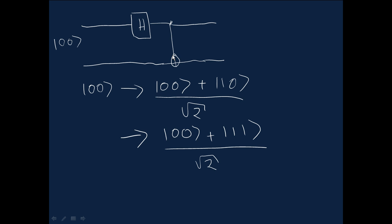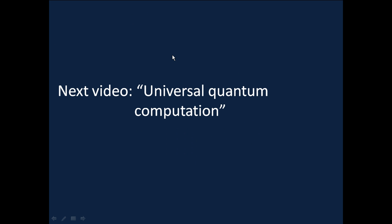Okay, so that's the CNOT. We now have all the elements we need to do any quantum computation, in fact. And so in the next video, we're going to talk about the general model of quantum computation and what it means to do universal quantum computation.